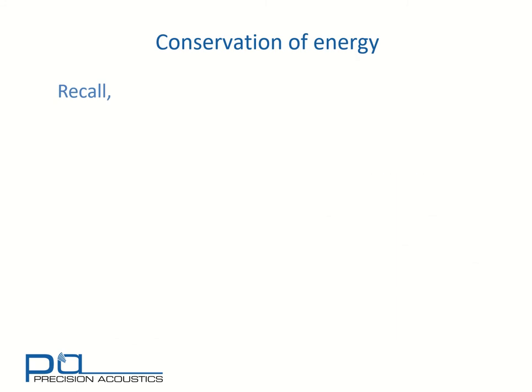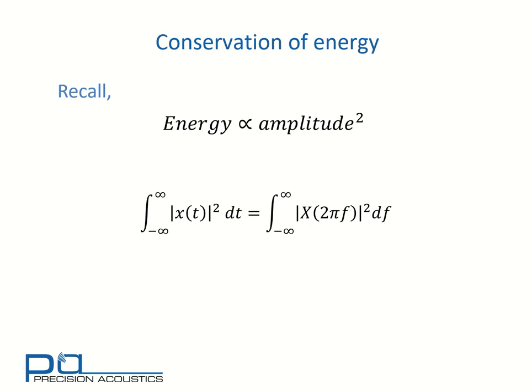We can also look at conservation of energy and how that's impacted by the Fourier transform. We recall that energy is proportional to amplitude squared. So if we consider the amplitude squared in the time domain, we find that the sum of all the different amplitude components is equal to the sum of all the spectral amplitudes squared in the frequency domain. This is Parseval's theorem.